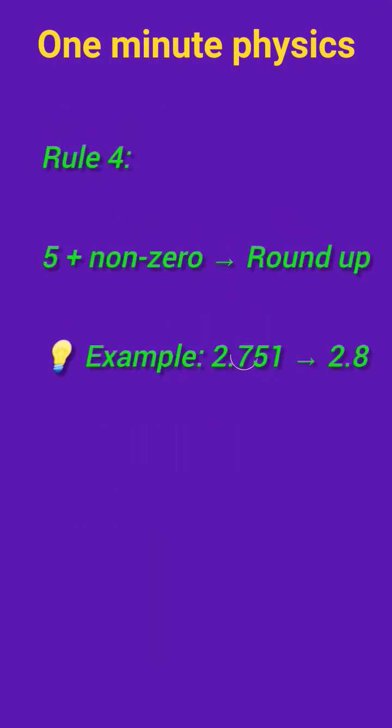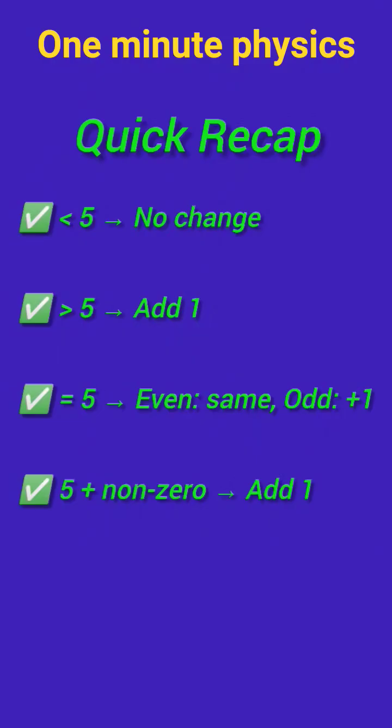See the next rule: if the digit you drop is 5 and it's followed by a non-zero digit, then it should be rounded up by 1. See the example - in 2.751, the answer should be 2.8.